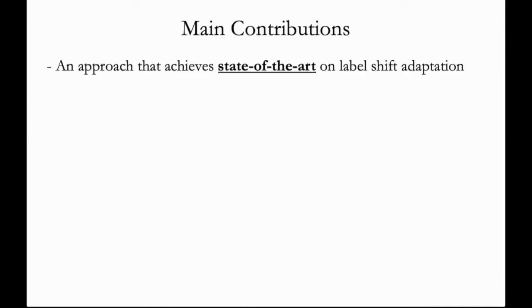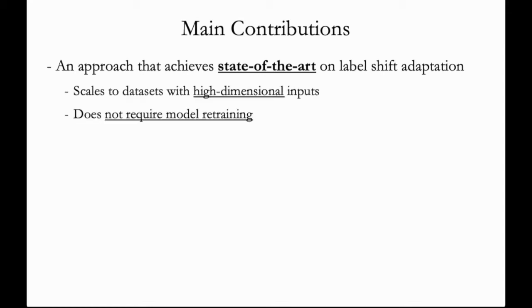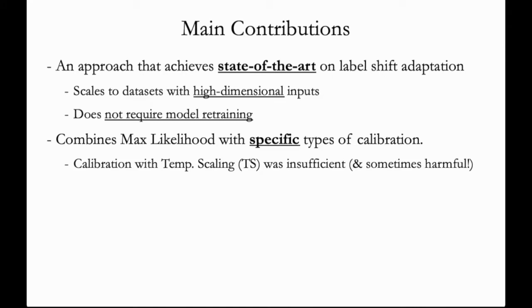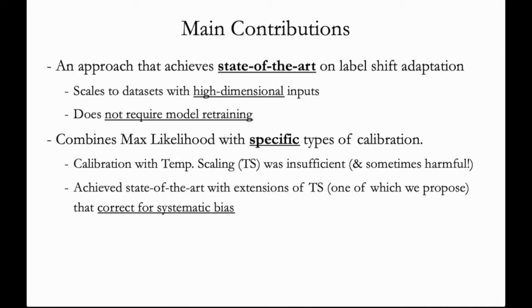In this work, we present a new approach that achieves state-of-the-art results at label shift adaptation. Unlike several alternatives, the approach can scale to datasets with high dimensional inputs and does not require model retraining. It works by combining an existing maximum likelihood approach with specific types of calibration. And I emphasize specific because one of our key findings was that the popular calibration technique of temperature scaling is insufficient and in fact sometimes harmful for performance. To achieve state-of-the-art results, we had to use extensions of temperature scaling that correct for systematic bias.